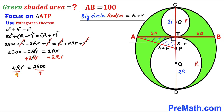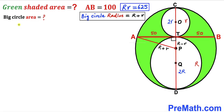Dividing both sides by 4, we find that R times r equals 625.